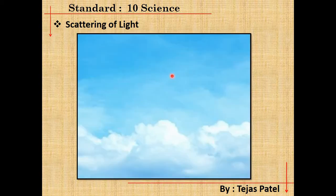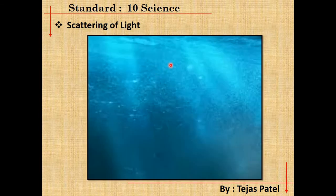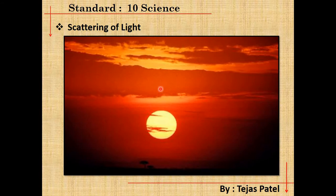Here you can see that the sky has a blue color — why does the sky appear blue and not red, white, or black? Next, you can see that the deep water of the ocean also has a blue color. On sunset and sunrise, you can observe that the sun becomes reddish and the atmosphere becomes reddish. Why does this happen?